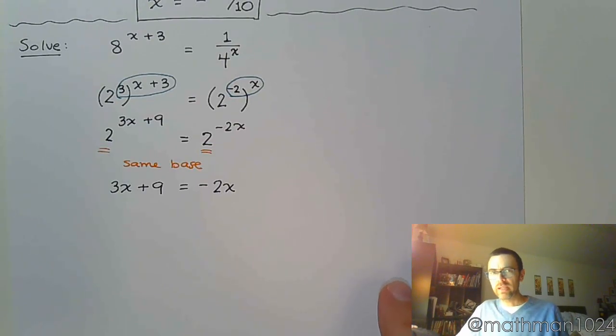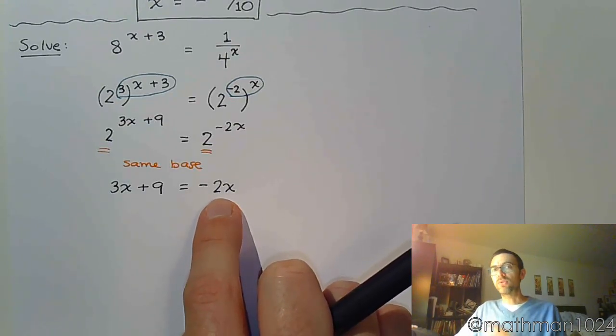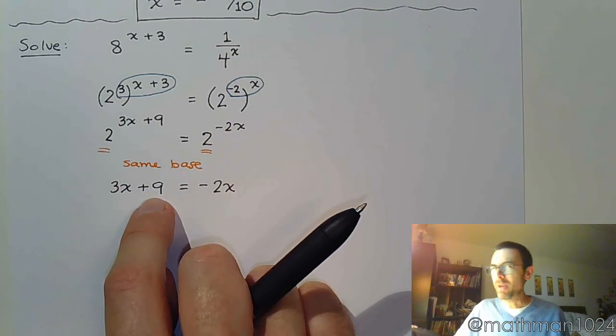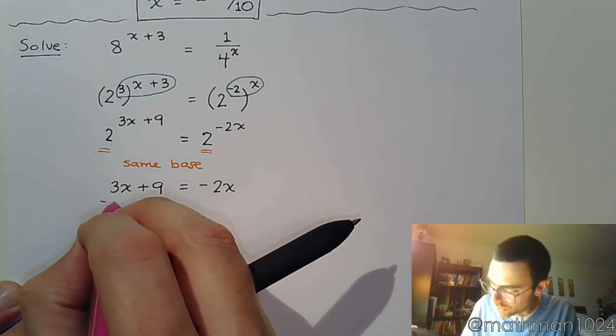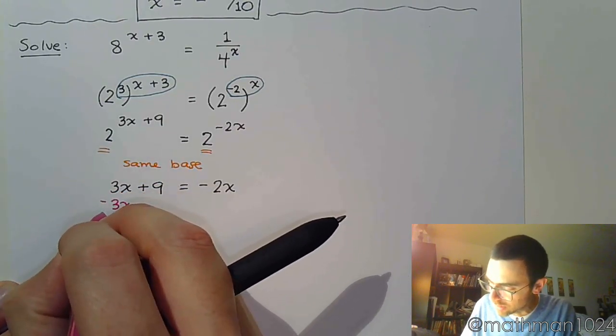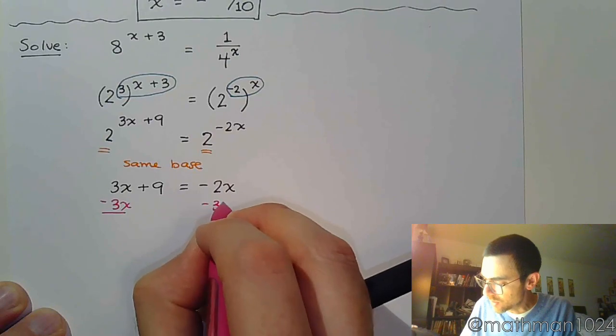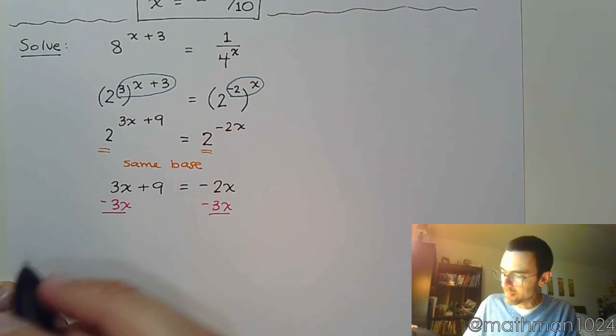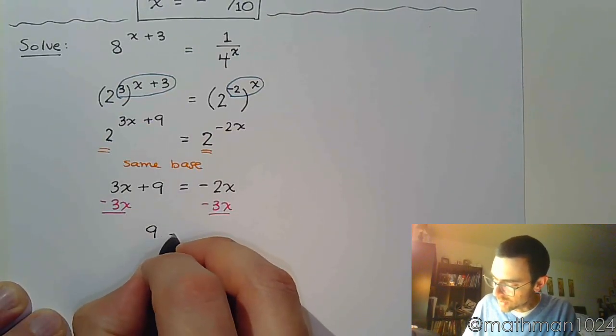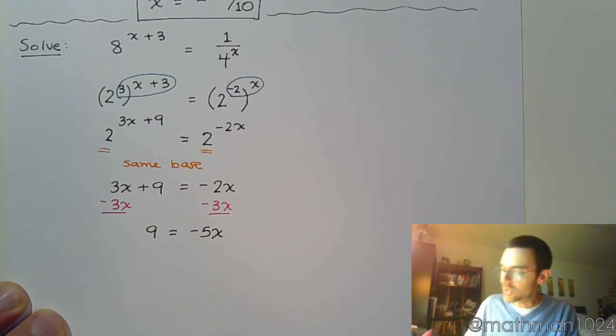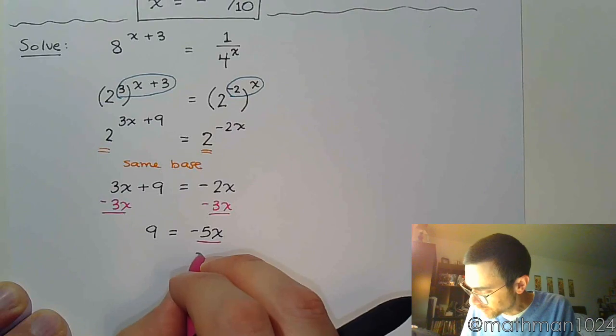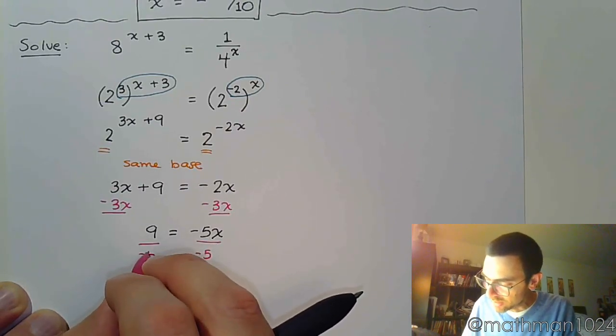Now, normally, I would move that, you know, this negative 2x to the other side, so I have a positive coefficient. But, this is the only place where I have my constant term, so I think I'm actually going to move my variables to the right this time. So, let's subtract 3x on both sides. All right, so 9 is equal to negative 5x.